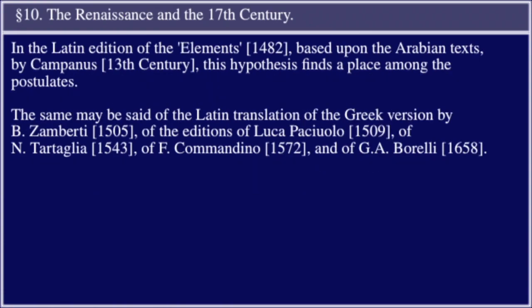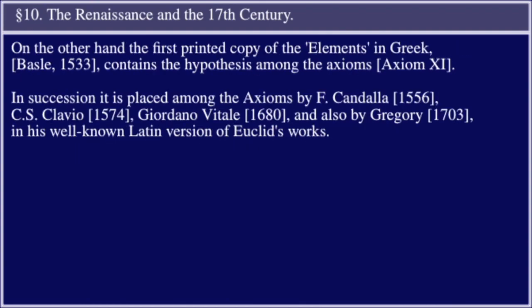In the Latin edition of the Elements (1482), based upon the Arabian text by Campanus (13th century), this hypothesis finds a place among the postulates. The same may be said of the Latin translation of the Greek version by B. Zamberti (1505), of the editions of Luca Picciolo (1509) and Nicola Tartaglia (1543), of Commandino (1572), and of G. A. Borelli (1658). On the other hand, the first printed copy of the Elements in Greek, Boswell (1553), contains the hypothesis among the axioms.